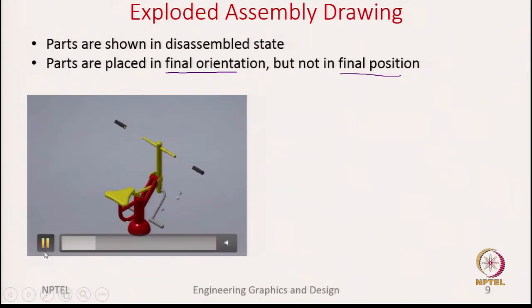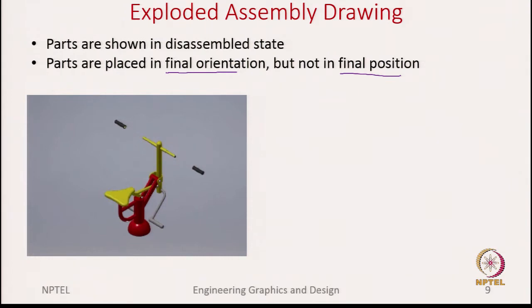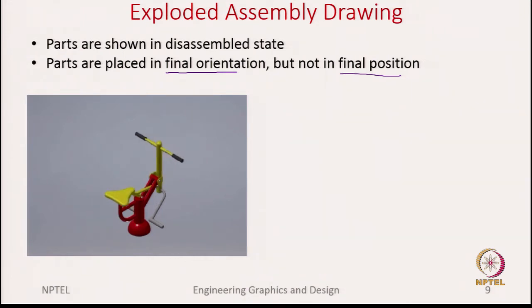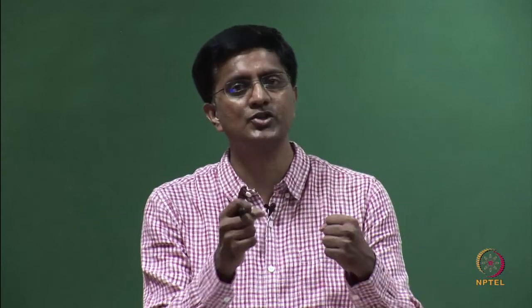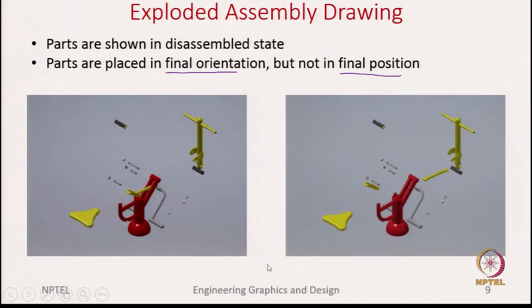As you can now see, each of these parts are moved away from the assembly, but when they are moved away the final orientation of each part is retained the same. The only thing is they are moved away in such a fashion that none of these parts overlap with each other. The purpose is to show all of those parts without overlapping, but maintaining the same orientation. The whole idea is to convey to the viewer how these parts assemble together.